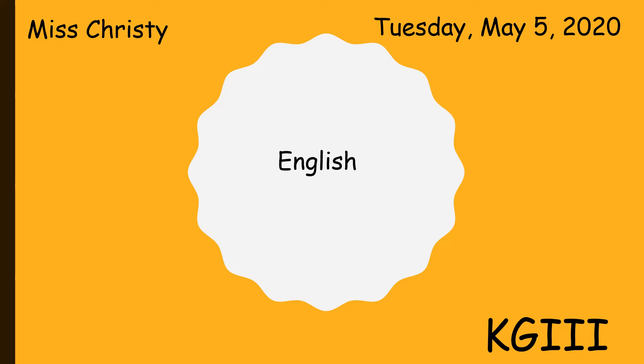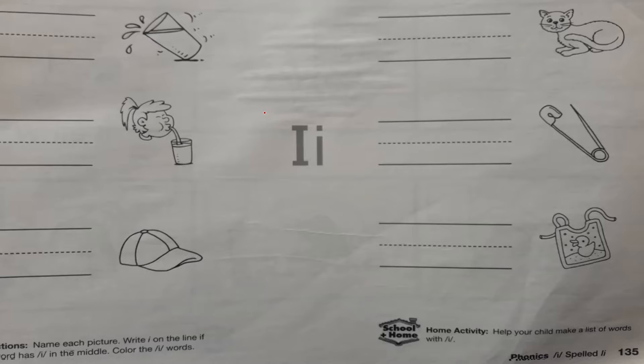Our objective for today is to review the letter I. Let's begin. I want you to name each picture. Write I on the line if the word has I in the middle.